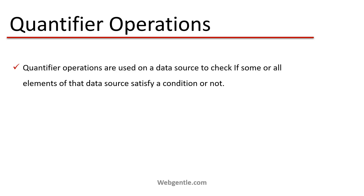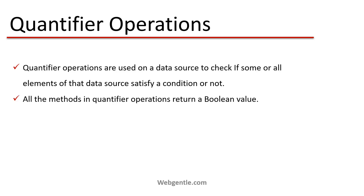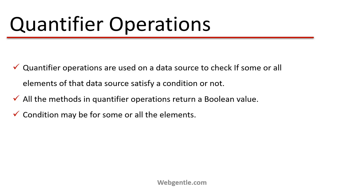So in this scenario we have a data source and a condition, and we need to check whether all the elements or some of the elements of that data source satisfy the specified condition. All the methods in quantifier operations return a boolean value, so the return type is either true or false based on the condition — true if elements satisfy the condition, false otherwise. The condition may apply to some or all elements of the data source.